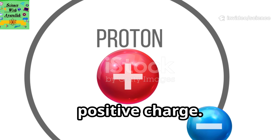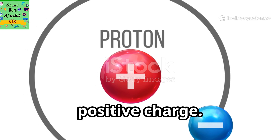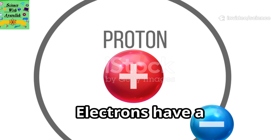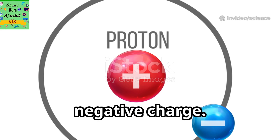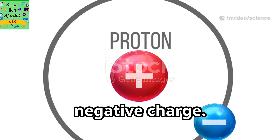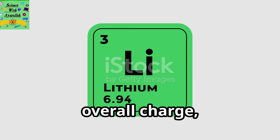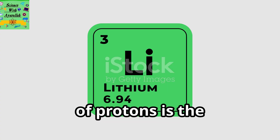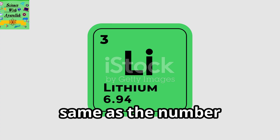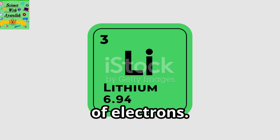Protons have a positive charge. Electrons have a negative charge. An atom has no overall charge because the number of protons is the same as the number of electrons.